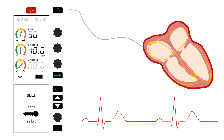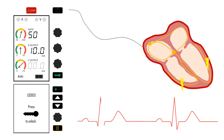Here, the pacemaker is in AAI with only an atrial lead, and the heart is conducting normally. The pacemaker is sensing the intrinsic atrial activity as before. Pacing is inhibited in response to sensing, as the mode is AAI — the I stands for inhibit. The pacemaker will not pace the heart if it senses underlying atrial activity.